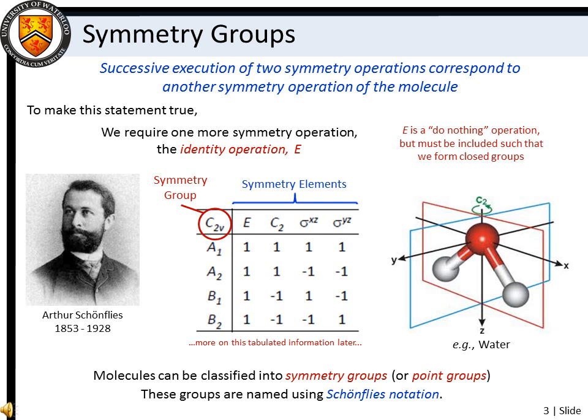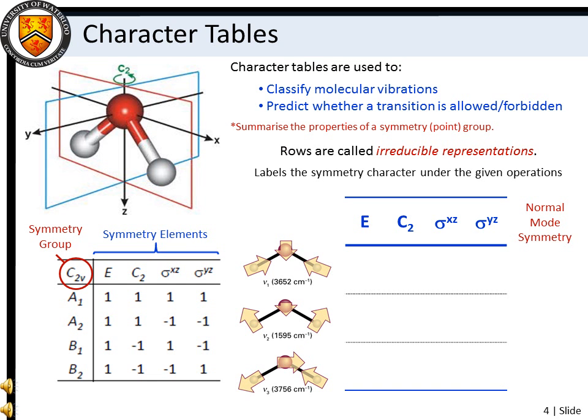You will become more familiar with symmetry groups if you continue with more advanced study in chemistry, physics, or mathematics. Symmetry groups are often reported in character tables, which summarize the properties of symmetry groups. The rows of a character table are called irreducible representations, which can be thought of as the unique vectors within the symmetry space. The labels we use to describe these vectors provide a shorthand way of describing the symmetry character of a species under the given symmetry operations.